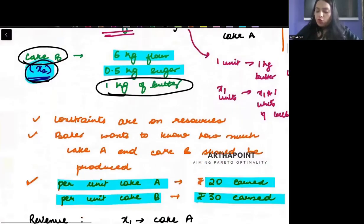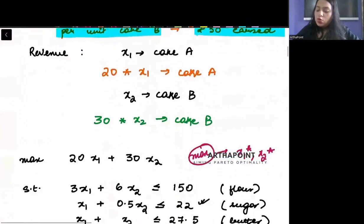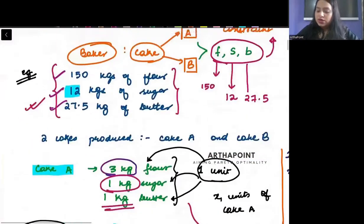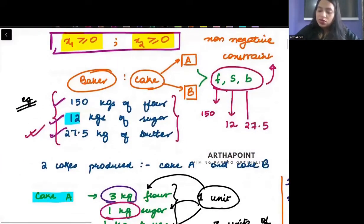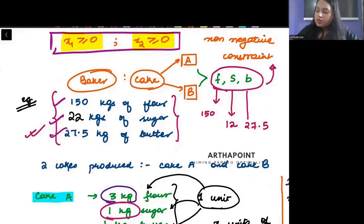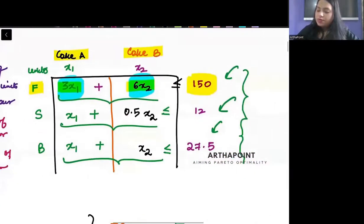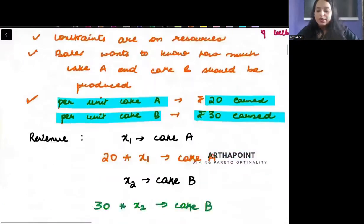Now, one correction: this value should be 22 everywhere. It is 22 in the book, so let's make it 22 everywhere.